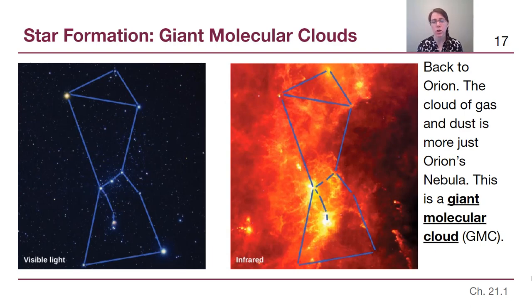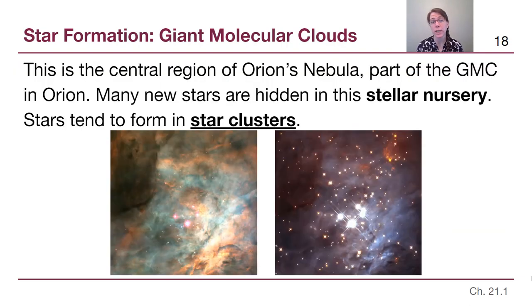Orion is part of what's called a giant molecular cloud, a much larger structure than just a single portion that happens to glow as an emission nebula. Another really important part of Orion's nebula is the fact that when we zoom in on it, the previous slide was taking a big picture view to make sure we understand that this is part of a larger structure called giant molecular clouds.